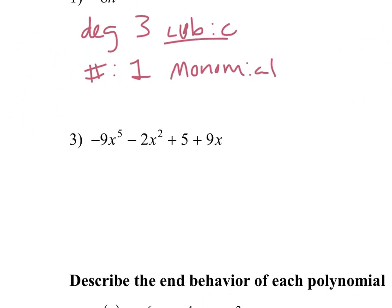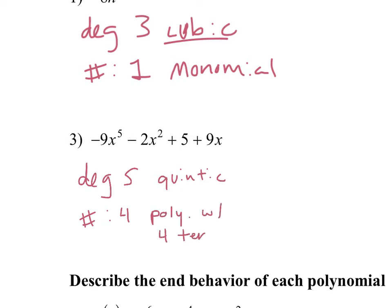Number three. What's our degree? Five. And how many terms do we have? Four. What do we call something with the degree of five? Quintic.